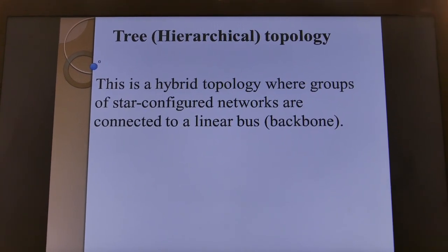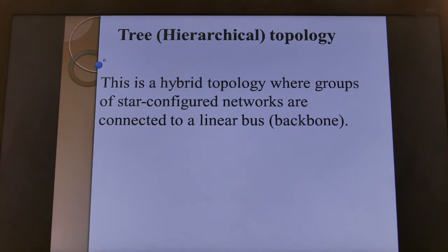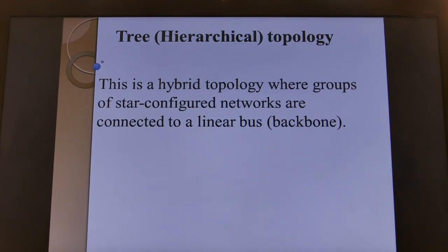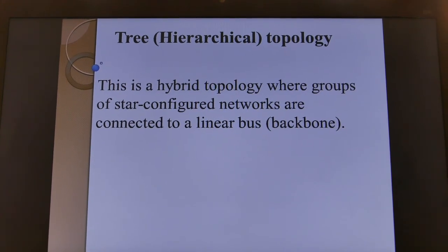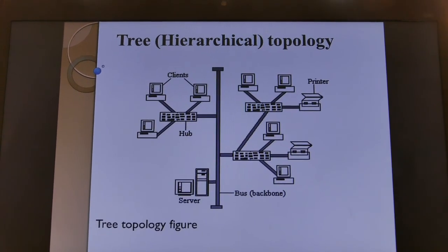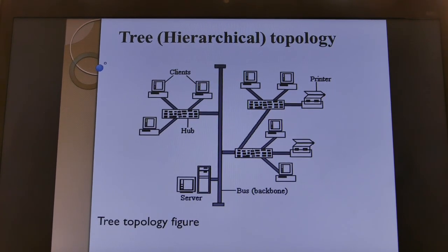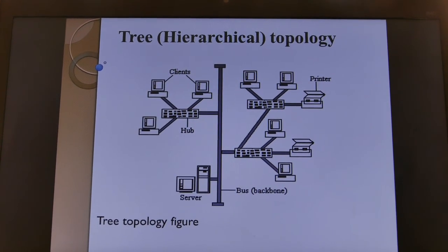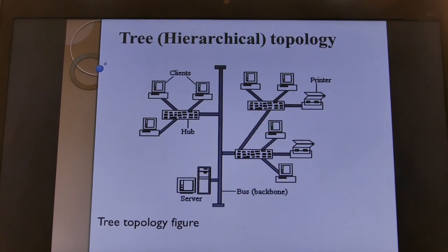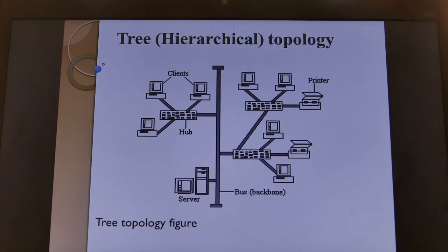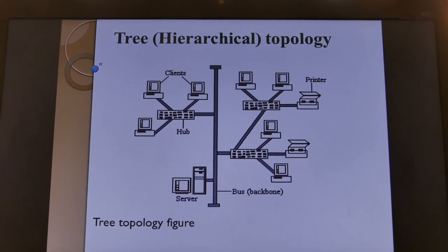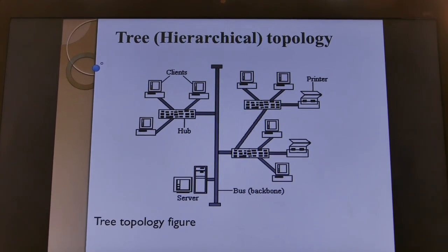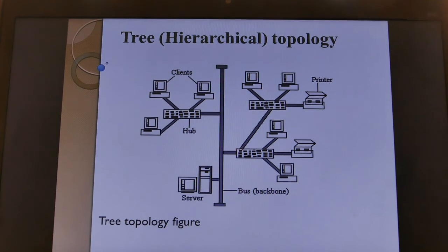Tree topology is a hybrid topology where all other topologies are connected to a linear bus or backbone. Inside this topology you have star topology, bus topology, ring topology, and also mesh topology. So it consists of many other topologies that are all connected in one bus or backbone cable. And that marks the end of our lesson.